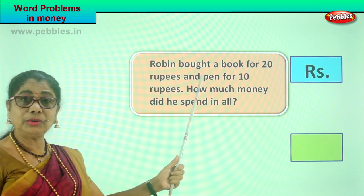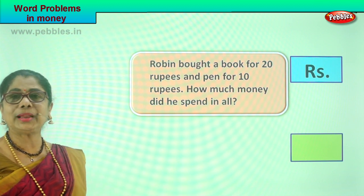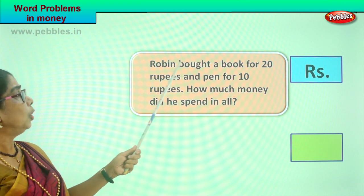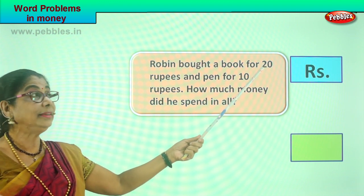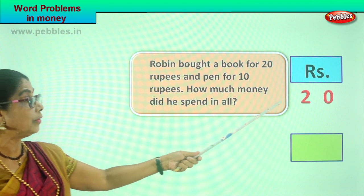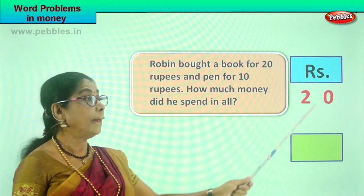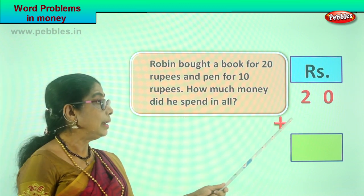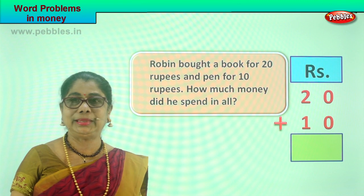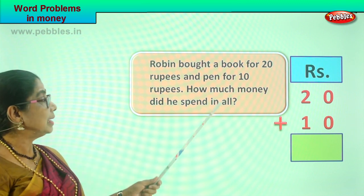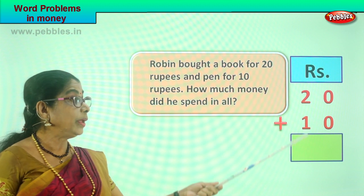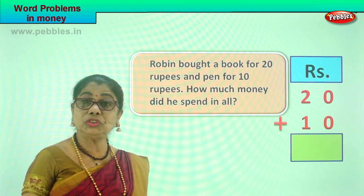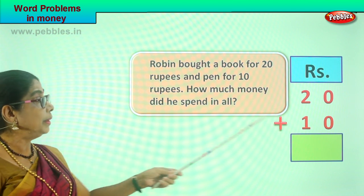Two items he bought. What is the total amount? That's what we are asking. What is the cost of the book? 20 rupees. So we write here 20. Plus, what is the cost of the pen? 10 rupees. So we write plus 10 rupees. Now they are asking how much money did he spend in all, so we have to add these two together and find the total amount spent by Robin.